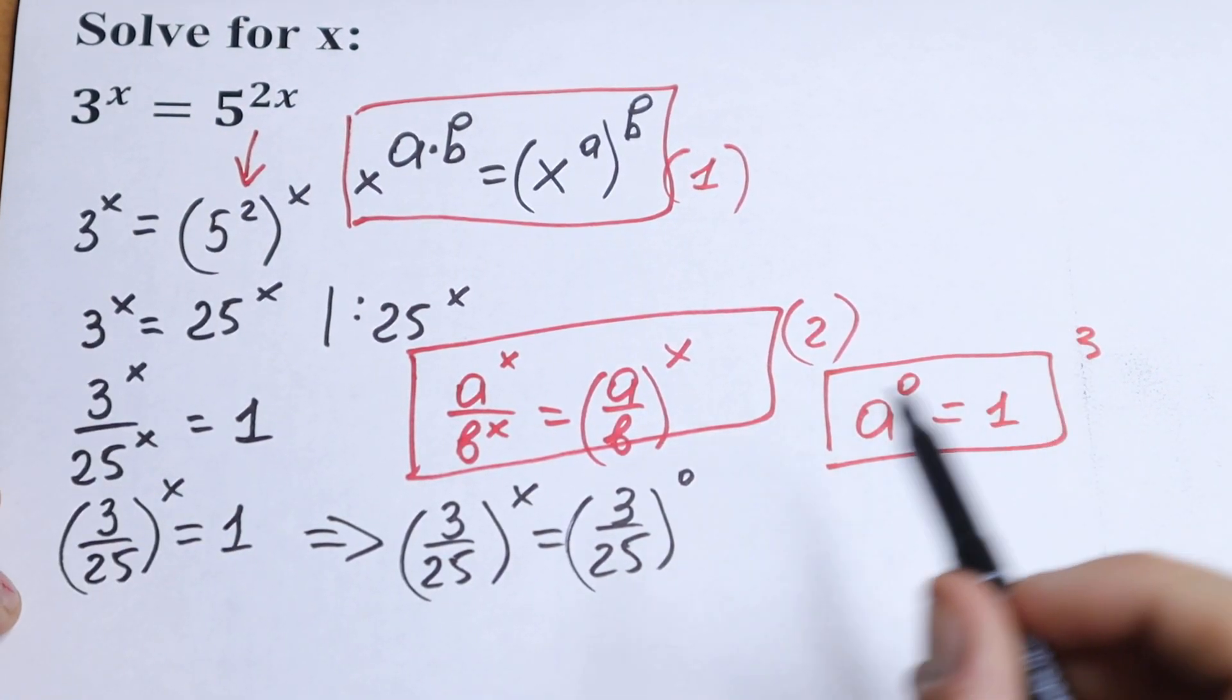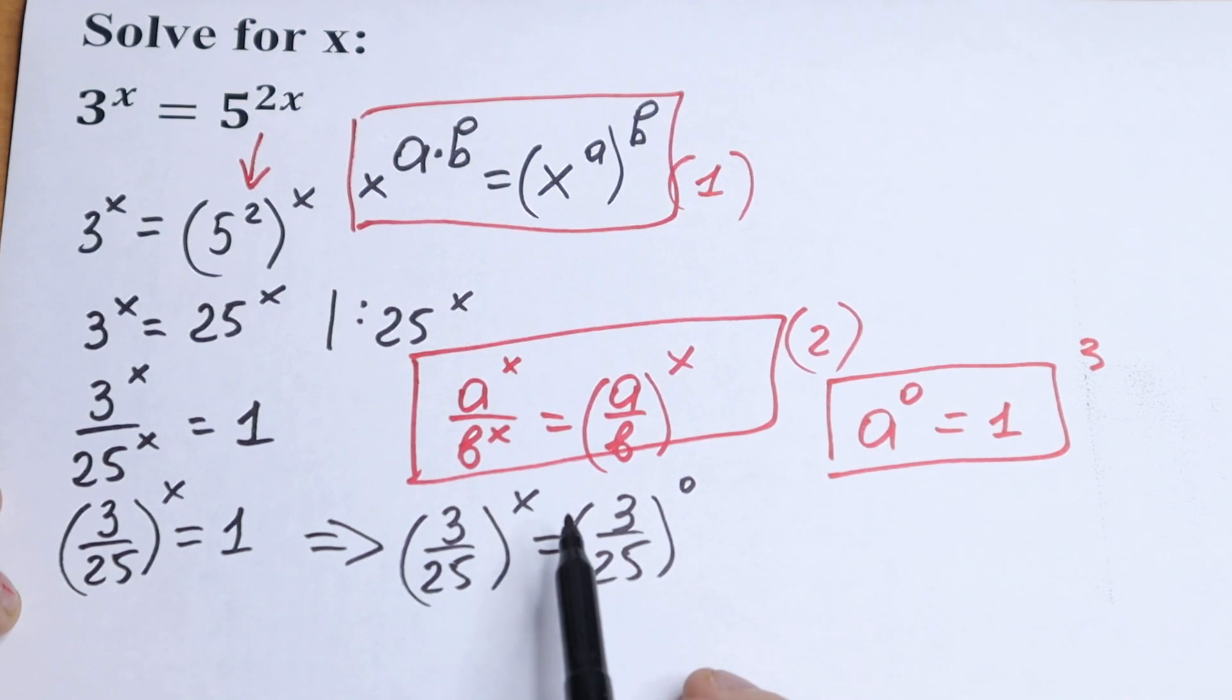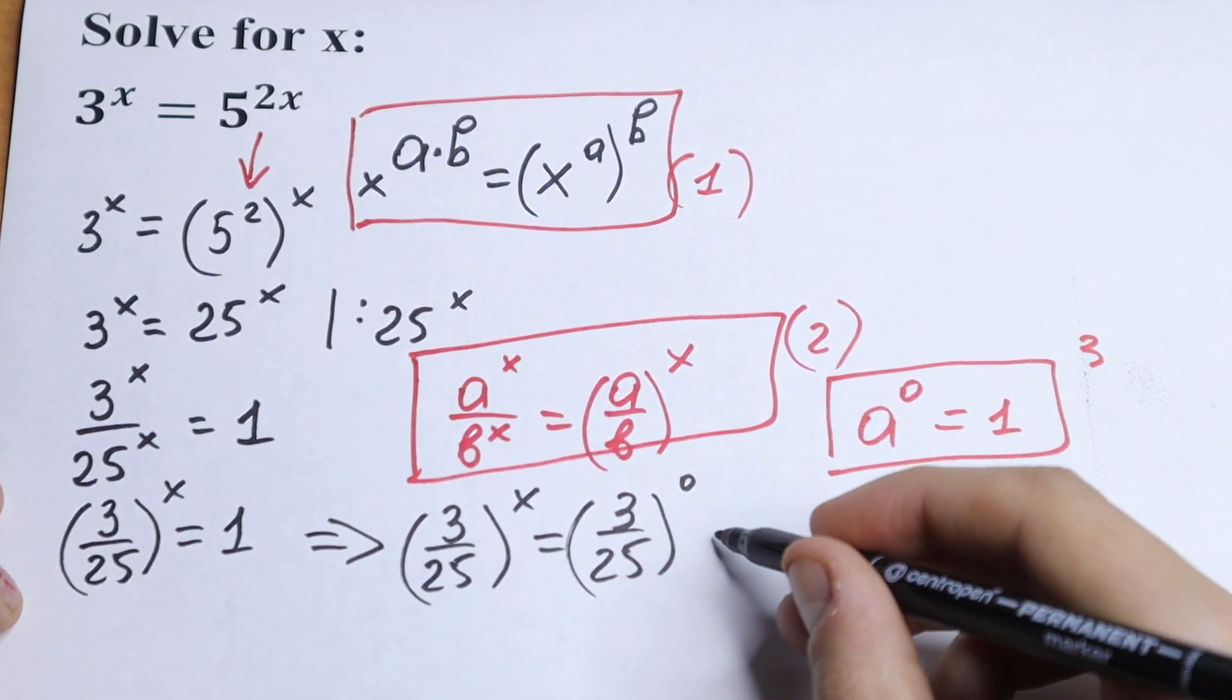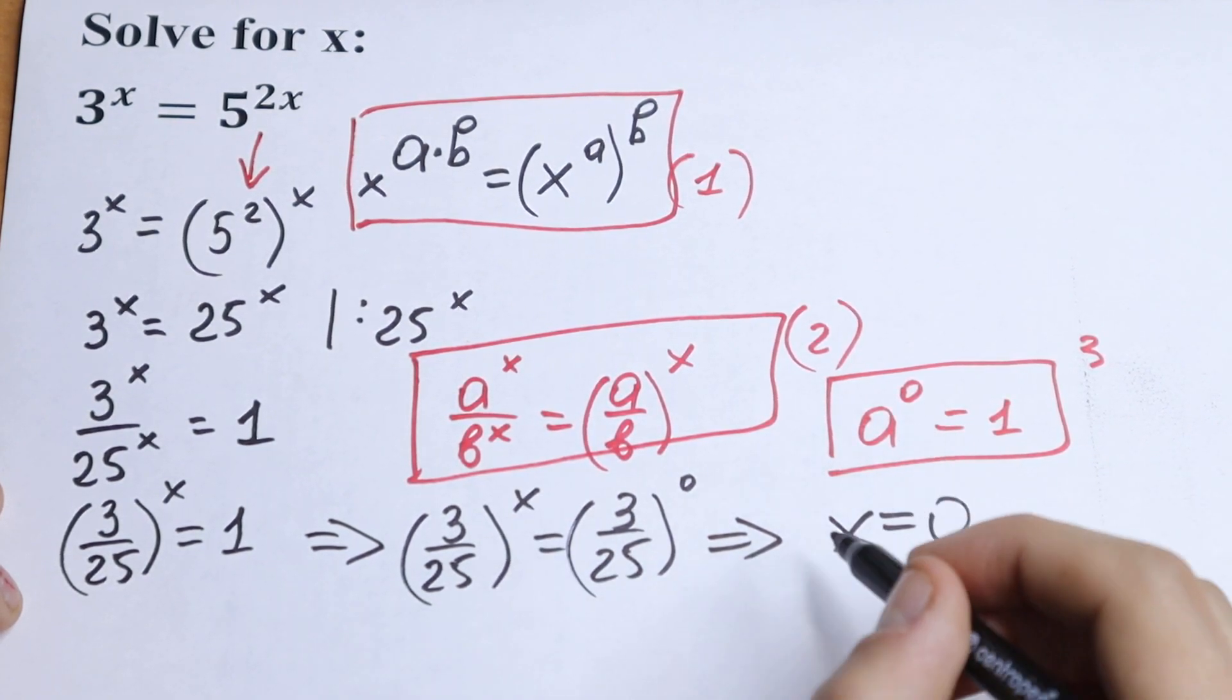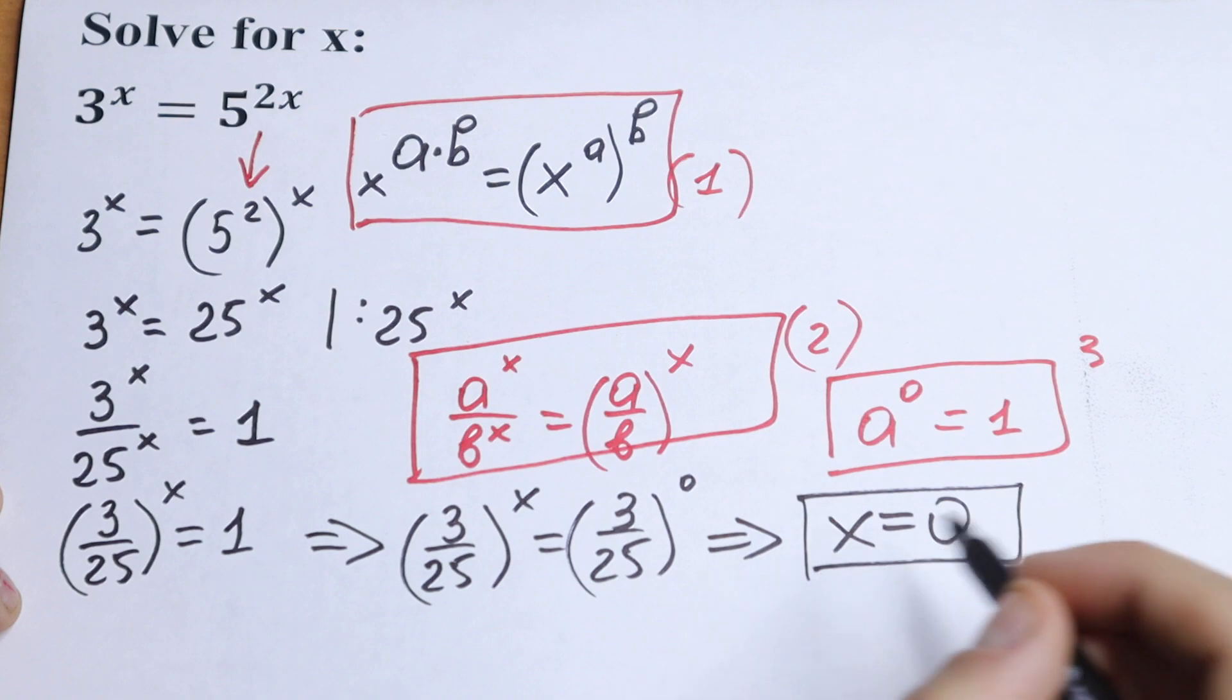And as you can see right here we have the same bases and we need to write an equation with our exponent. So if we have x equals 0, this is the one and only root.